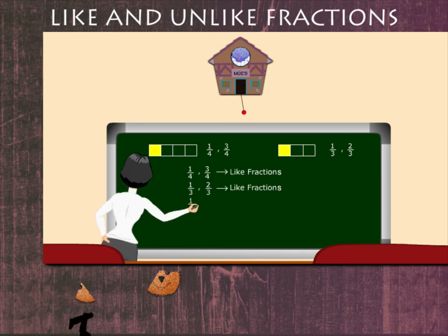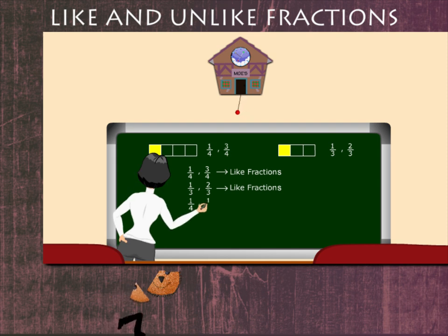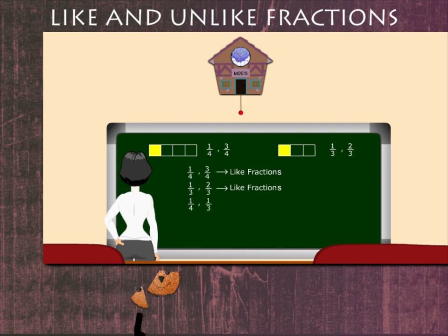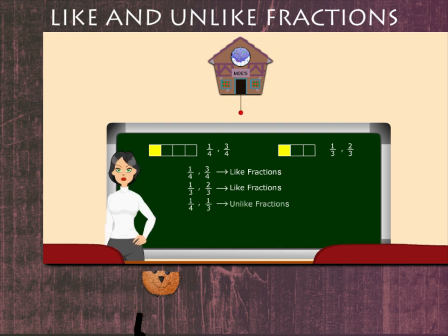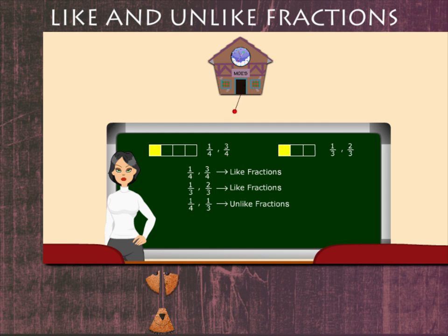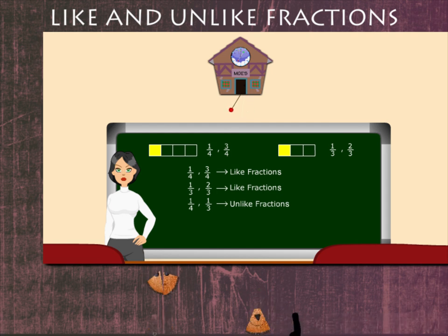But one-fourth and one-third are unlike fractions because their denominators are unlike.